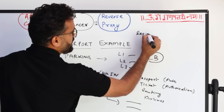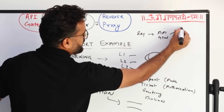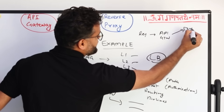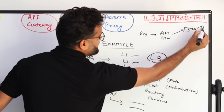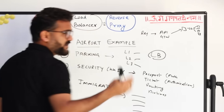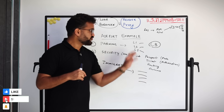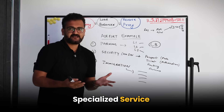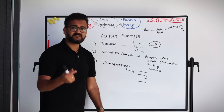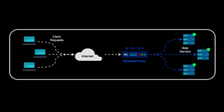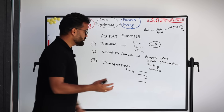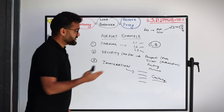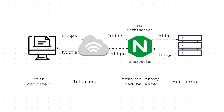For example, a request comes to the API gateway and it routes it to a particular microservice. That microservice can have its own load balancer distributing traffic to multiple back-end systems. Don't confuse routing with load balancing. Immigration maps to a reverse proxy — a specialized service where you are hiding the identity of your back-end system and caching static content to improve performance.